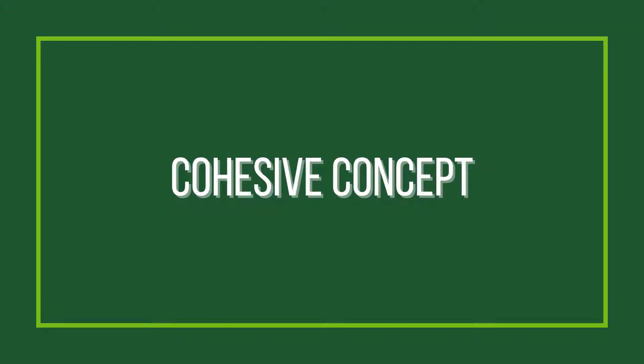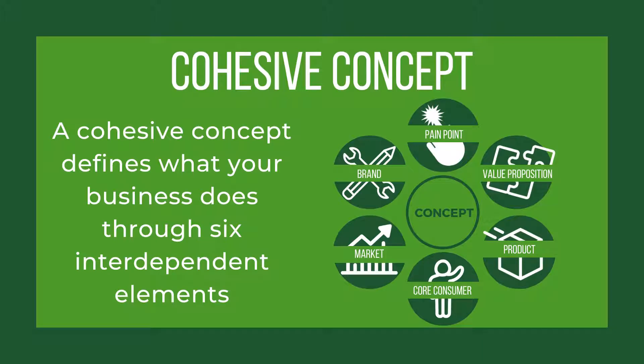Today's video is going to break down the six elements of a cohesive concept and explain how all the elements work together to form the foundation of your business. A cohesive concept defines what your business does through six interdependent elements: pain point, value proposition, product, core consumer, market, and brand.